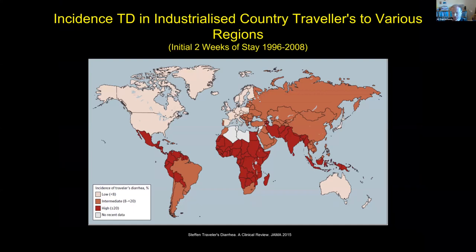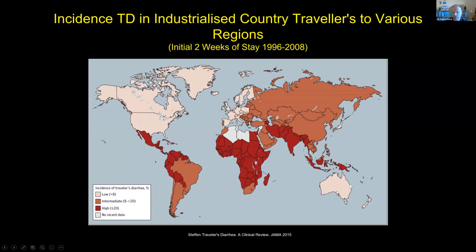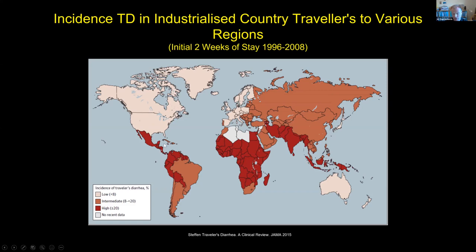Looking at general travelers — not particularly expeditioners — the rate of getting traveler's diarrhea in countries such as the UK is about two percent, quite low. In more affluent areas like North America and Australia it's similarly low, but more prevalent elsewhere. The hot spots are hot, tropical, humid areas with relatively poor economies, poor infrastructure, hygiene, and water supplies — particularly sub-Saharan Africa, Southeast Asia, Central America, and parts of South America. The risk is broadly related to the socio-economic status of the country, and in these countries it can be as much as 40 to 50 percent depending on your activity there.